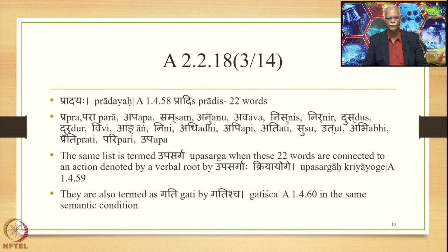...para, apa, sam, anu, ava, nish, nir, dus, dur, vi, aang, ni, adhi, api, ati, su, ut, abhi, prati, pari, and upa. These are the 22 words, at the beginning of which comes the word 'pra', and so these 22 words are labelled as pradis.